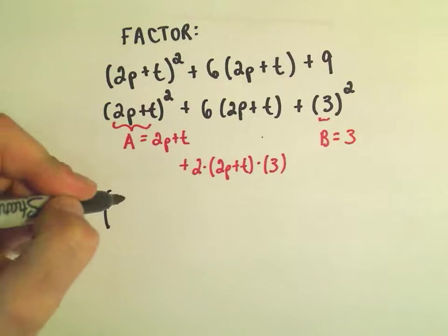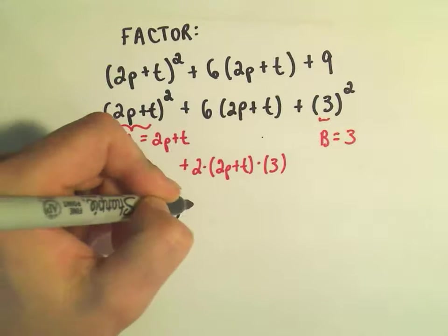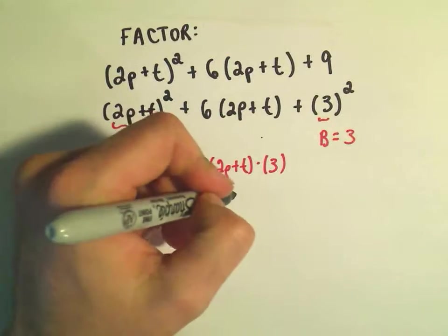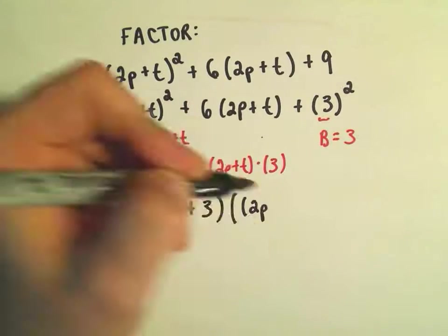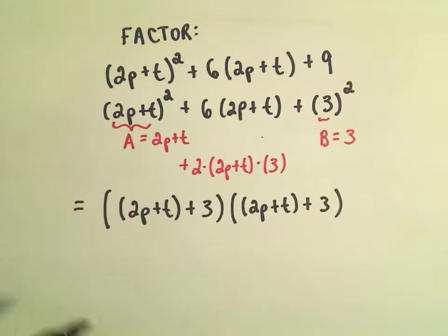It says we take a, which is 2p plus t, and it says we add to that b, which is positive 3, and then it says we just rewrite it again, it's a perfect square.